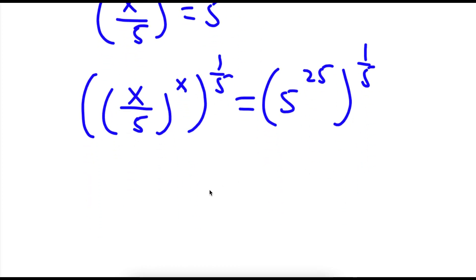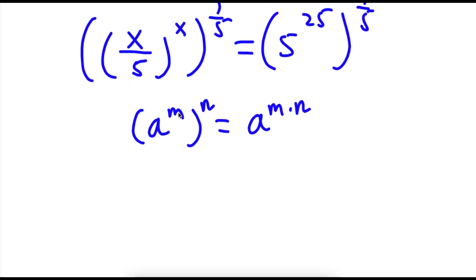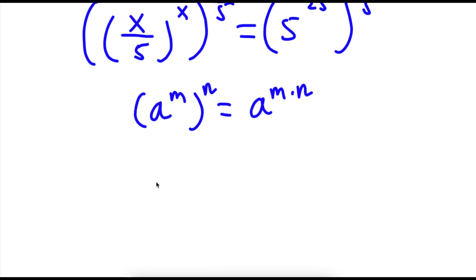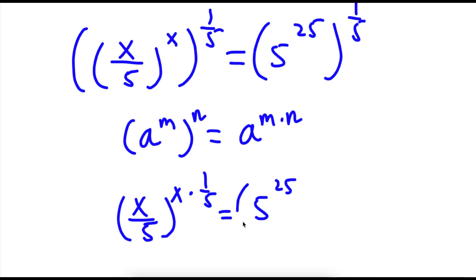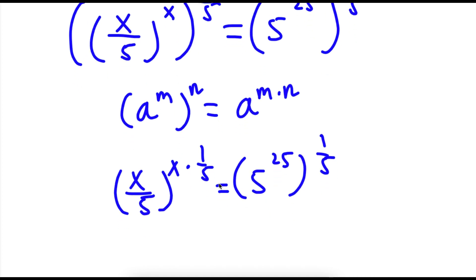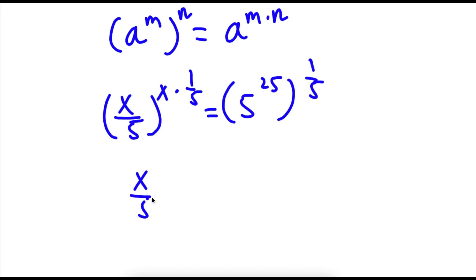Now if I have something in the form a to the power of m to the power of n, this is equal to a to the power of m times n. So x over 5 to the power of x to the power of 1 over 5 can be written as x over 5 to the power of x times 1 over 5. This is still equal to 5 to the power of 25 to the power of 1 over 5. Now x times 1 over 5 is the same thing as x over 5, so now I have x over 5 to the power of x over 5.